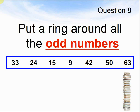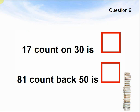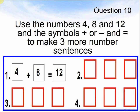Here comes question 9. Using the numbers 4, 8 and 12 and the symbols plus and minus, make three more number sentences. 4 plus 8 equals 12 — what are the other three number sentences you could make using these symbols and numbers? Pause the video until you are ready for question 11.